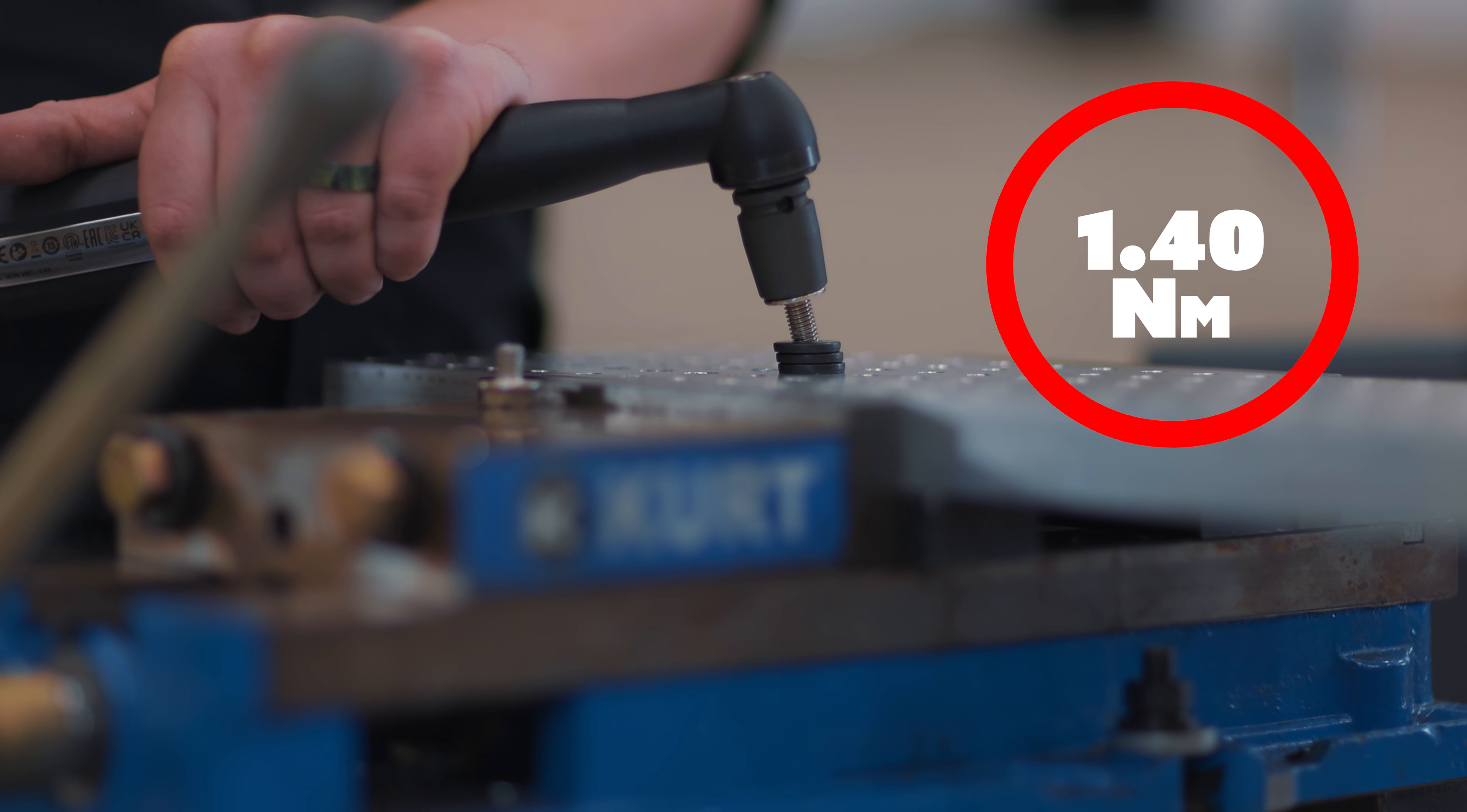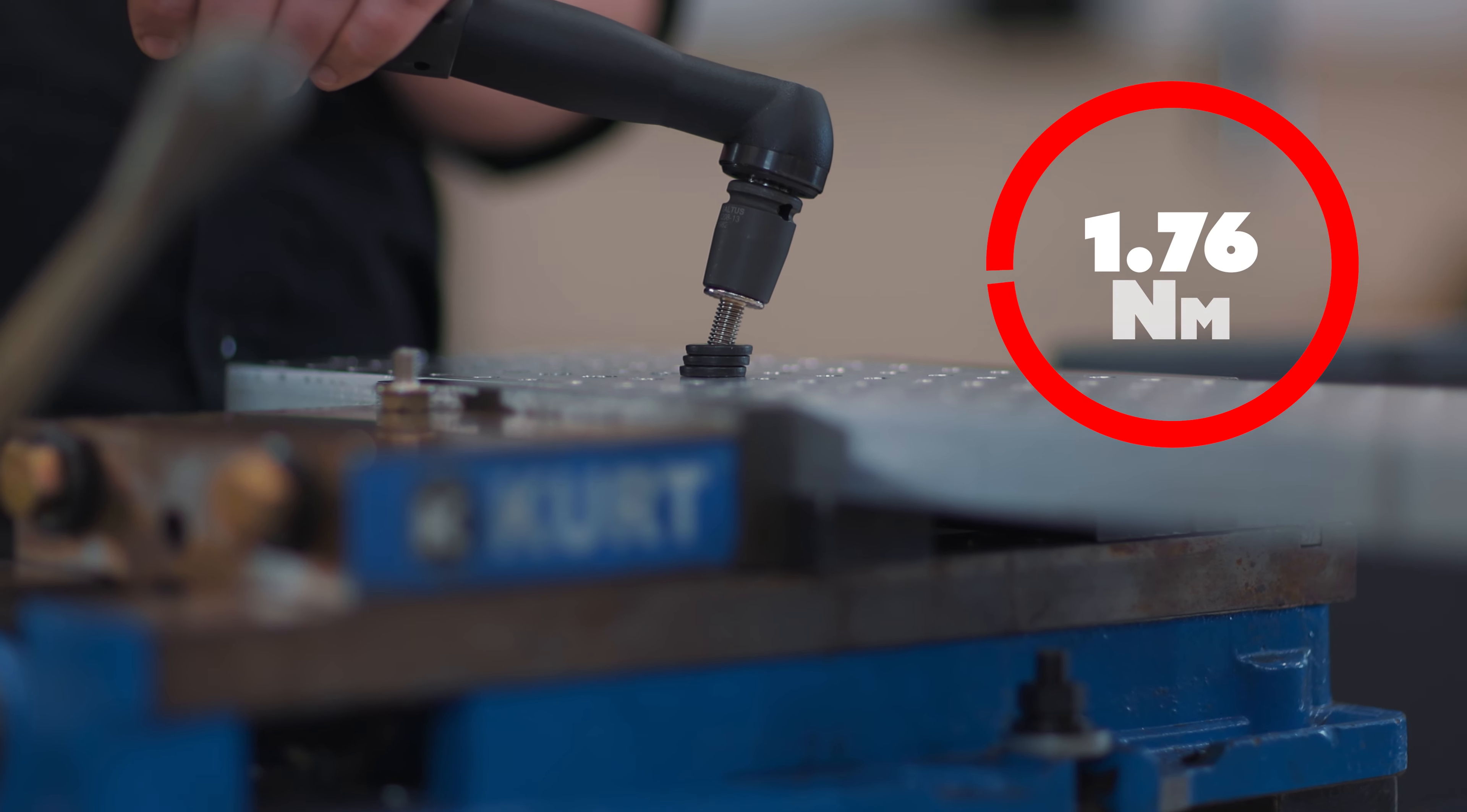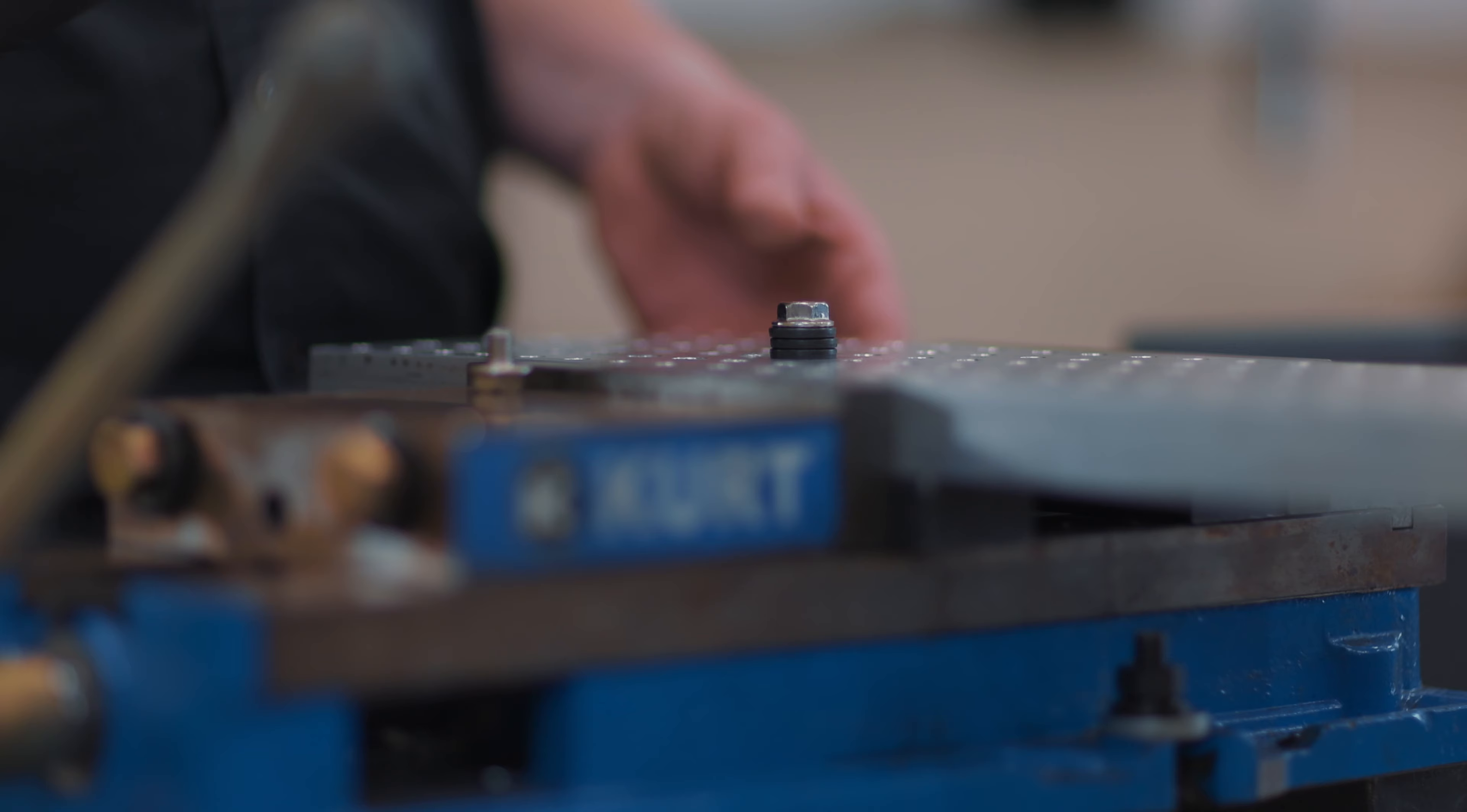All right, so let's see if we can start off our bolt in a crooked position like this and cause a cross thread. All right, you can see we only hit 1.4 newton meters of torque. If I back this out and start it at another angle, all right, that's also crooked. It's going to hit a cross thread again. 1.76 newton meters.